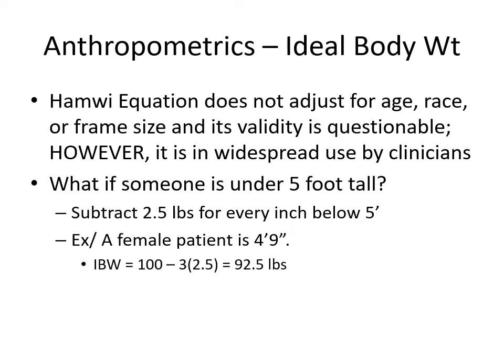The Hamwi equation does not adjust for age, race, or frame size, so its validity is so-so, but it is widely used by clinicians as a comparable standard. For patients under 5 feet tall, subtract 2.5 pounds for each inch below 5 feet. For example, a woman who is 4 foot 9 (3 inches below 5 feet): 100 − (3 × 2.5) = 92.5 pounds IBW.